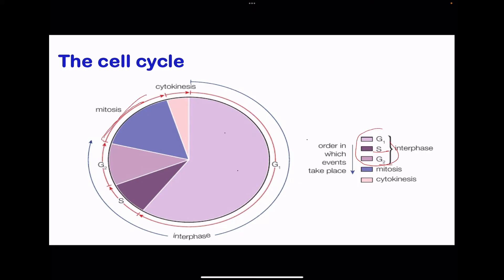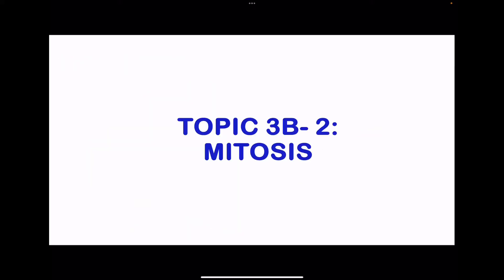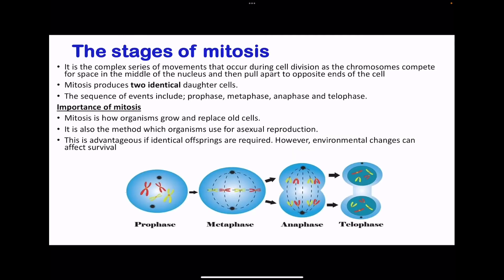Moving on to topic 3b2: mitosis. Mitosis involves complex series of movements during cell division, as the chromosomes compete for space at the middle of the cell and are pulled apart towards opposite ends to end up in two different cells. During mitosis, the daughter cells produced are genetically identical. Mitosis is broken down into prophase, metaphase, anaphase, and telophase. Mitosis is very significant in growth as well as replacement of old cells.